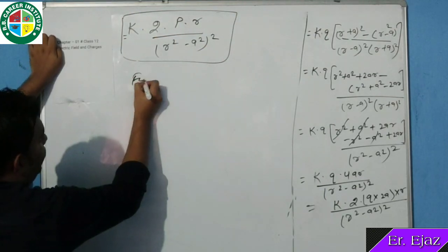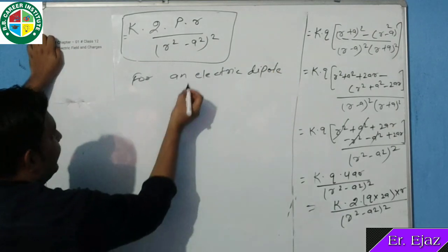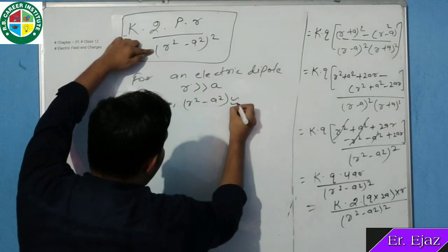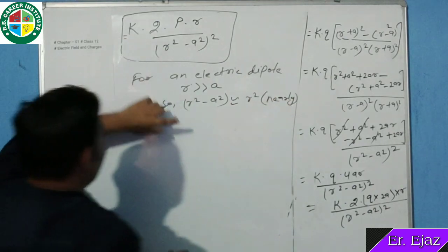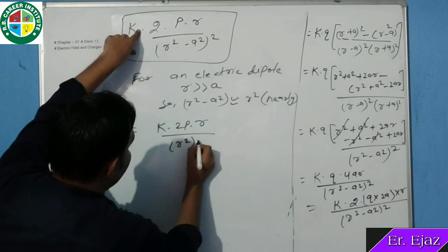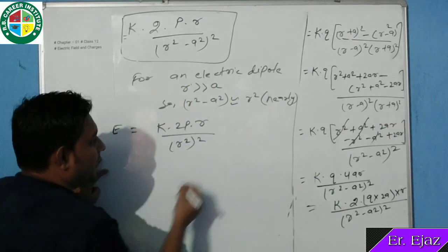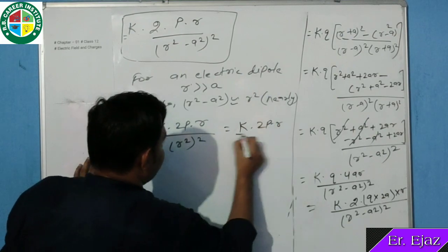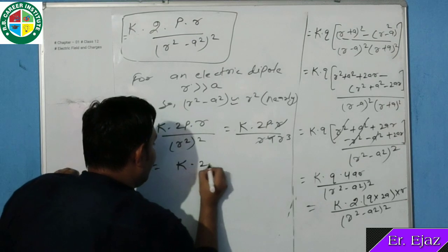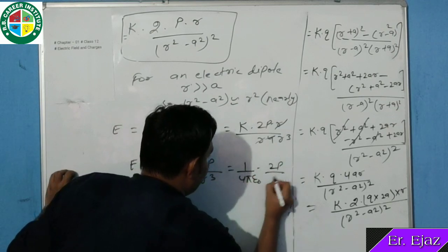R से cancel होने पर: E = K × 2P upon R³। या तो E = 1 upon 4π epsilon naught × 2P upon R³। यह हमारा final expression है electric field at a point on the axis of an electric dipole के लिए। MCQs में भी पूछ सकते हैं: which of the following is correct relation for electric field at a point on the axis of electric dipole?